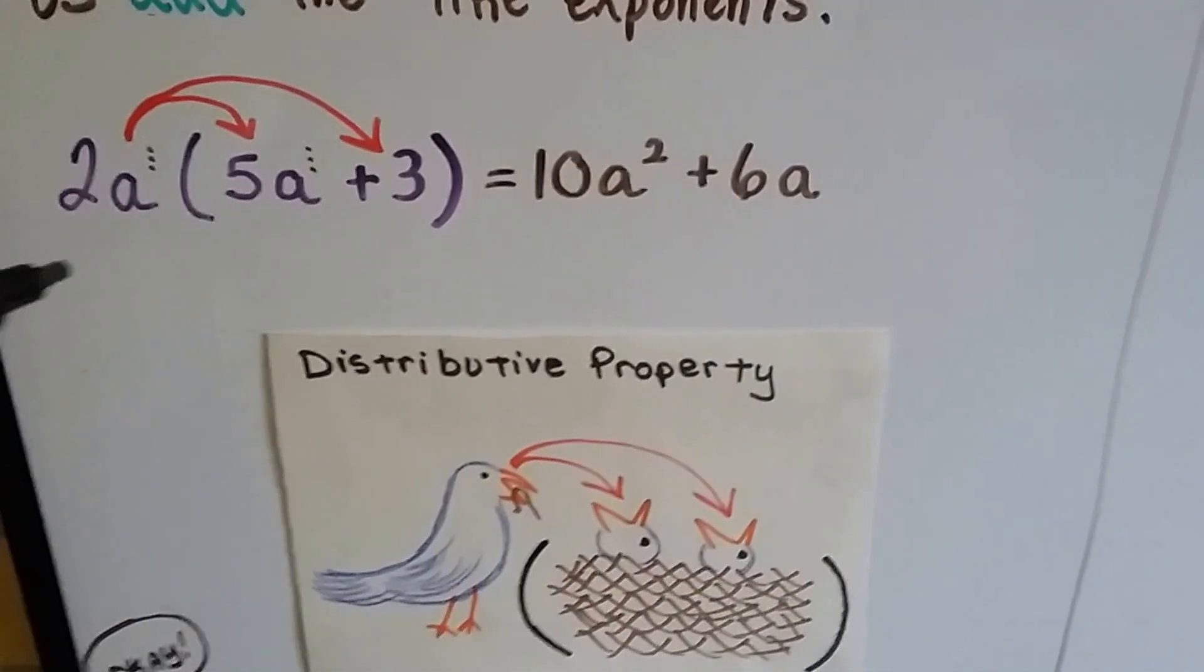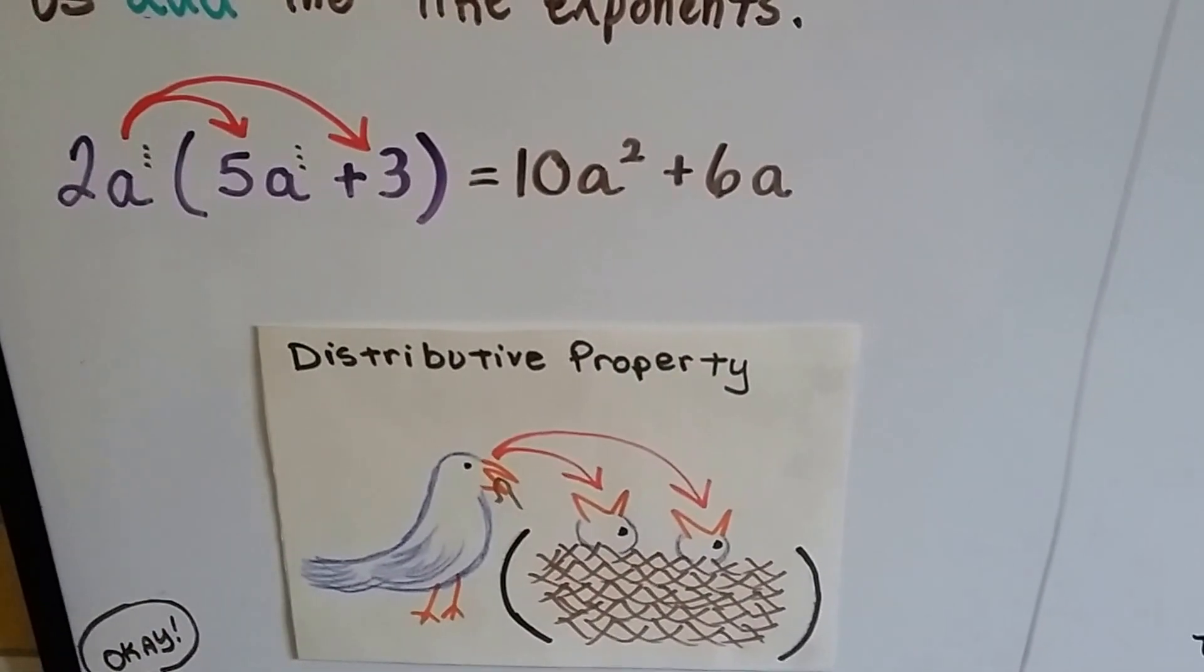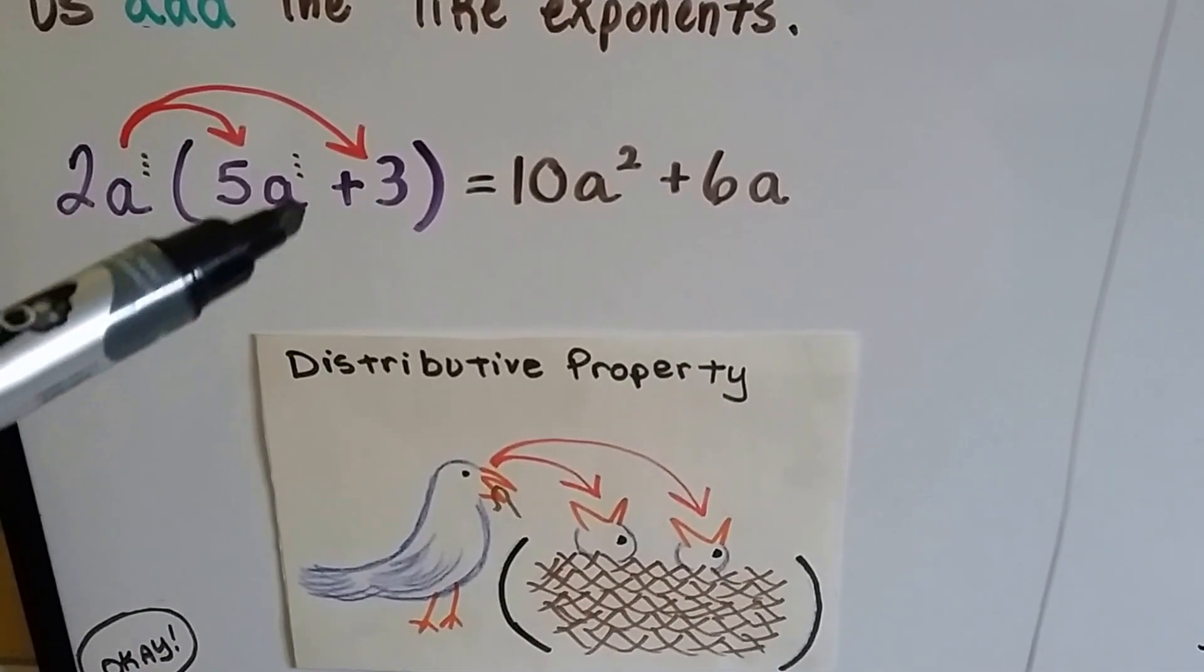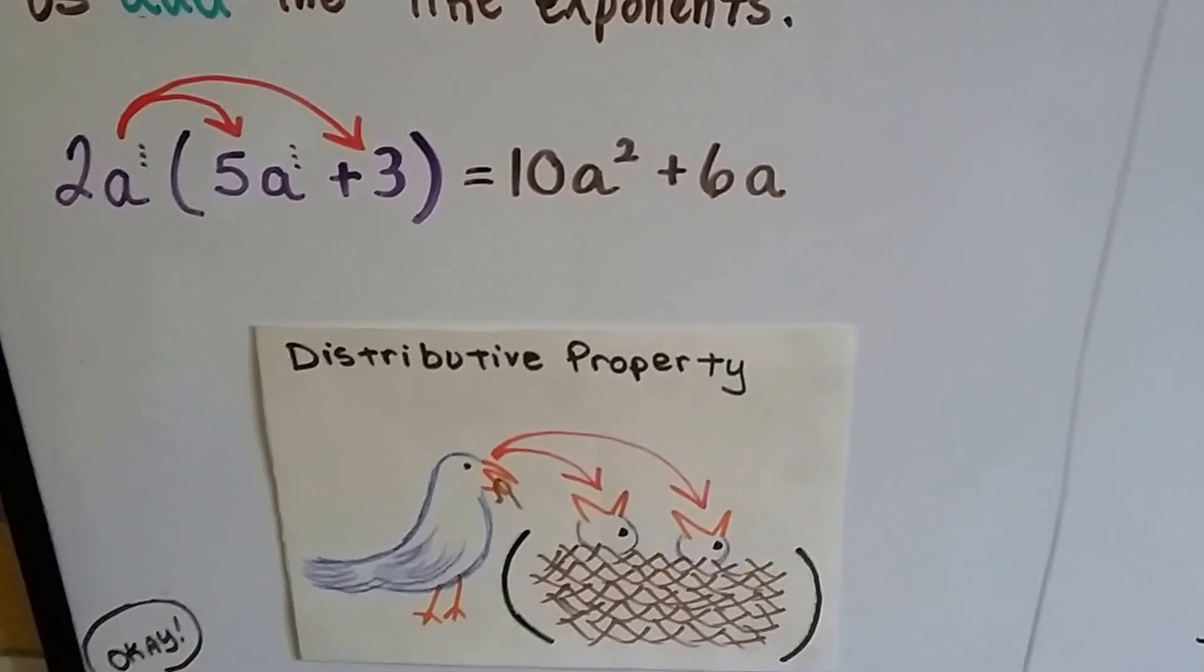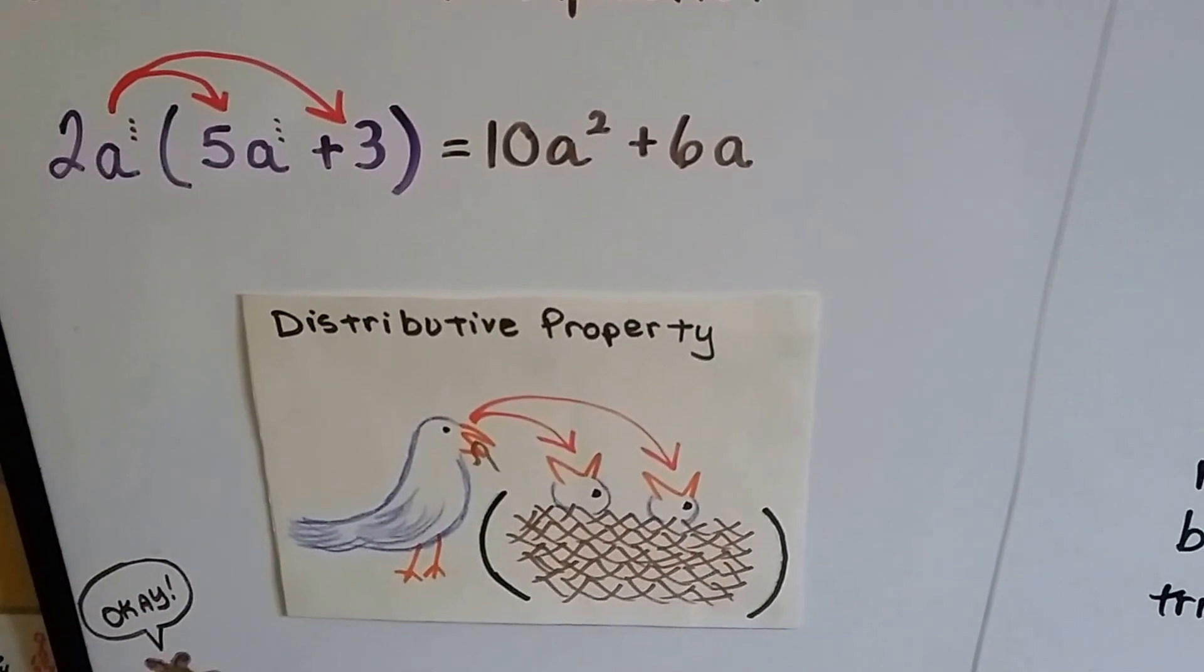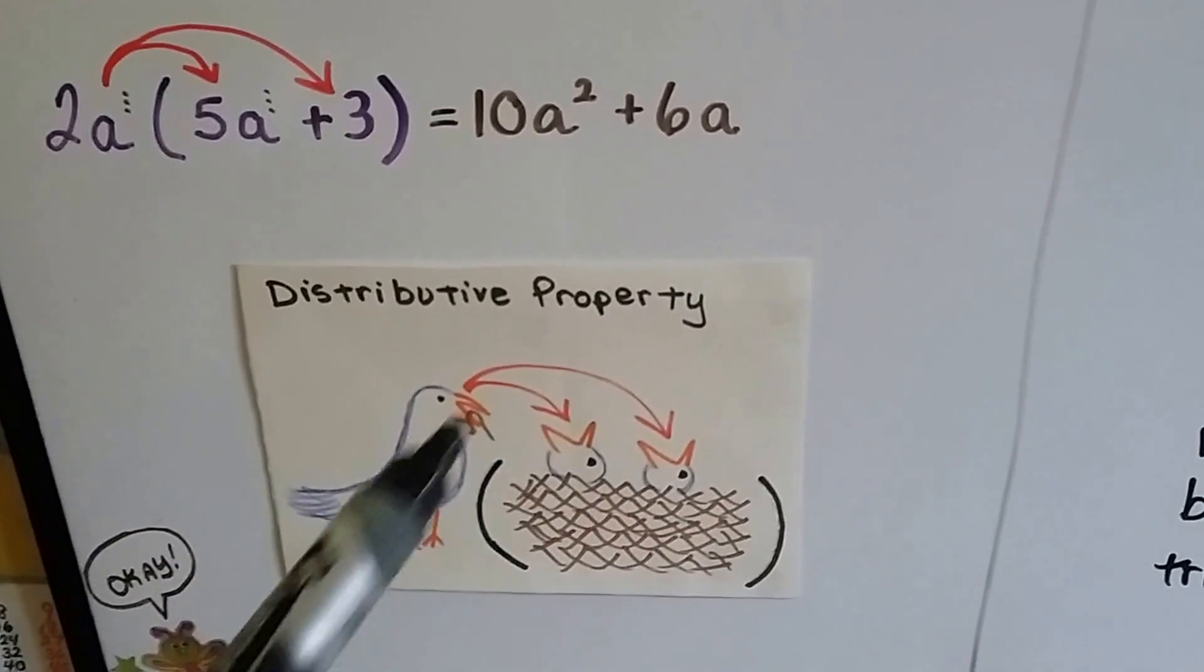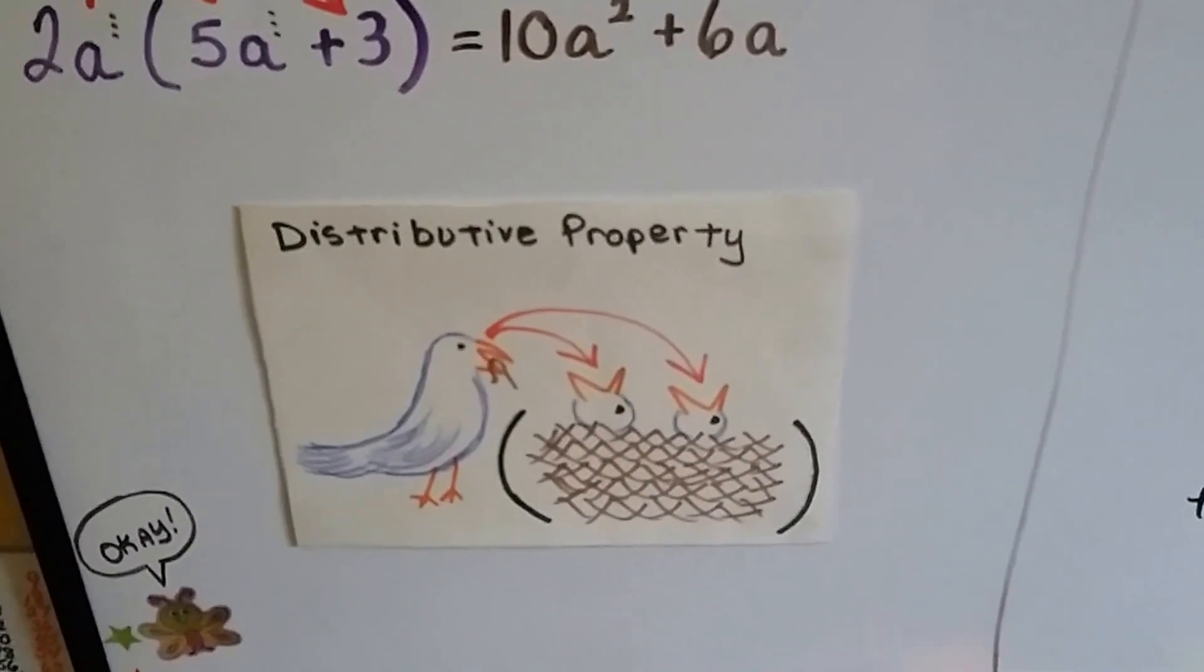Remember that the invisible one is there, and we would add them together. So we would get 2 times 5, which is 10. And this is an a to the first power and an a to the first power, so that would be a squared. And then 2a times 3 would become 6a. The a just goes along for the ride with the 2 times 3. So just remember the distributive property. You don't skip any terms. It goes to each one like the mother bird feeding the baby in the parentheses nest.